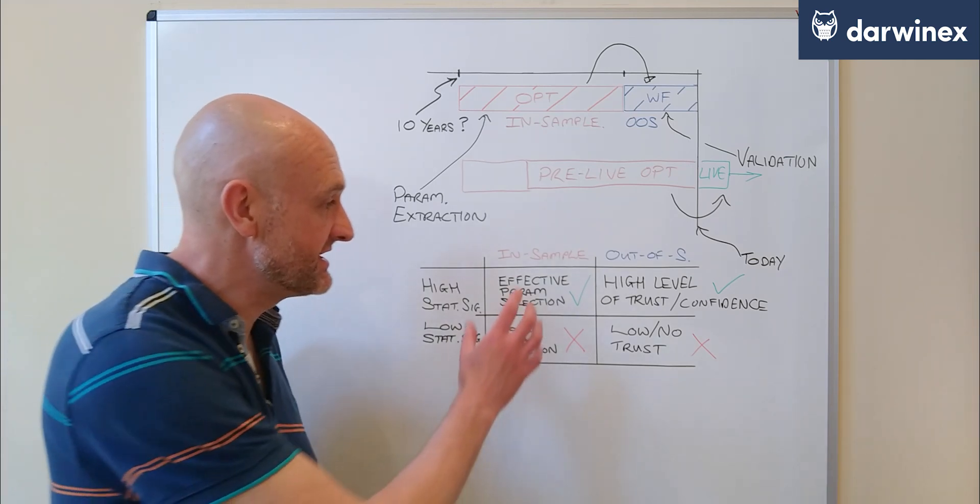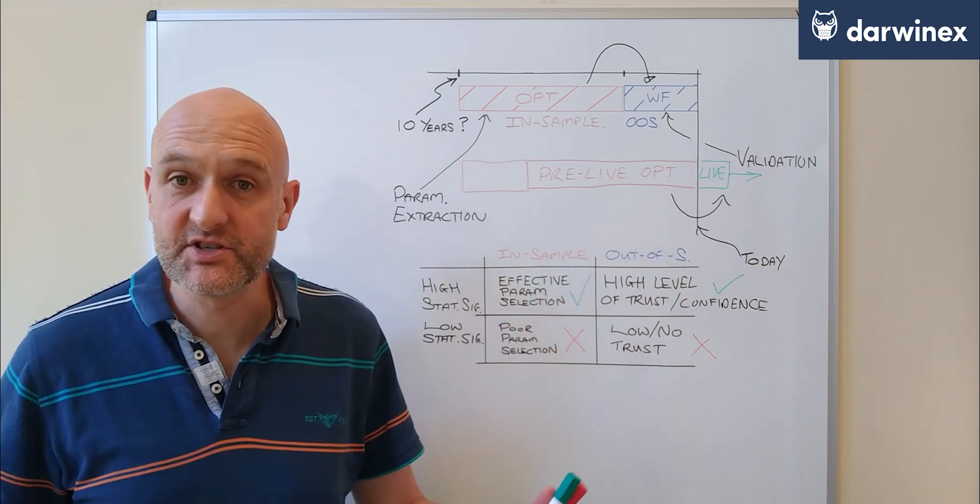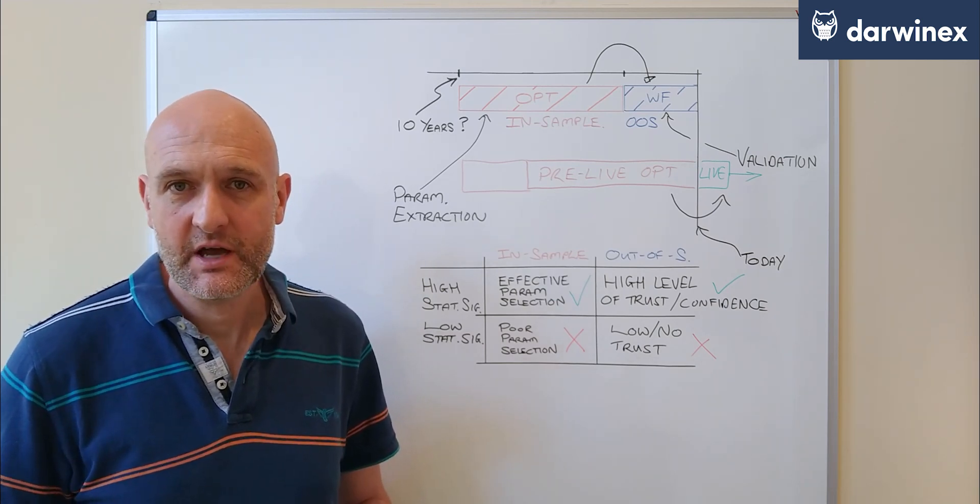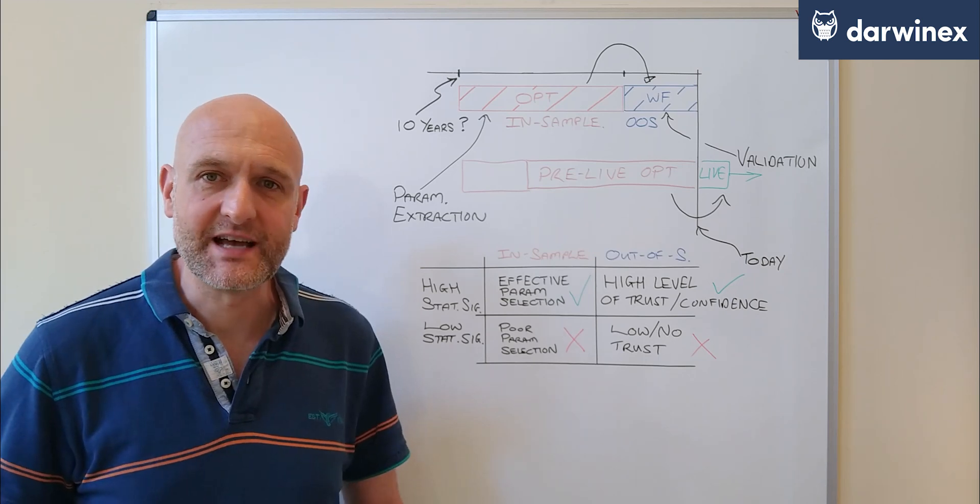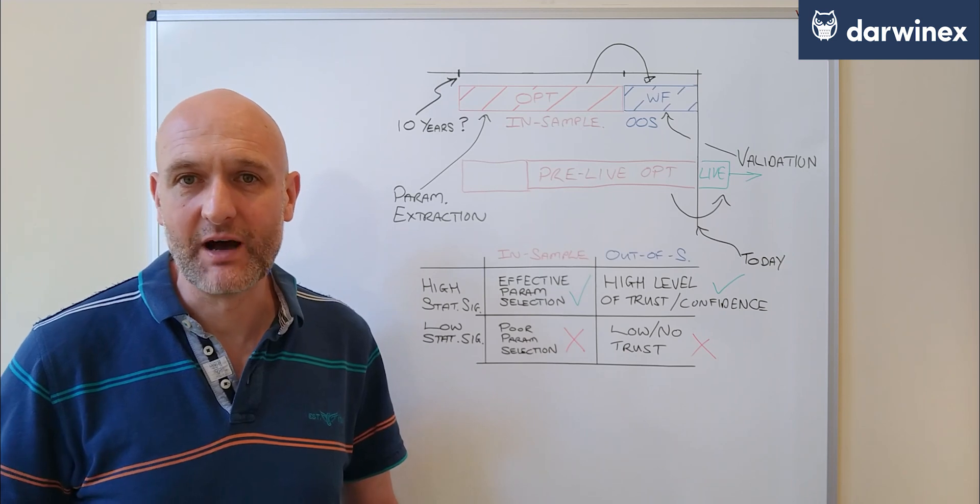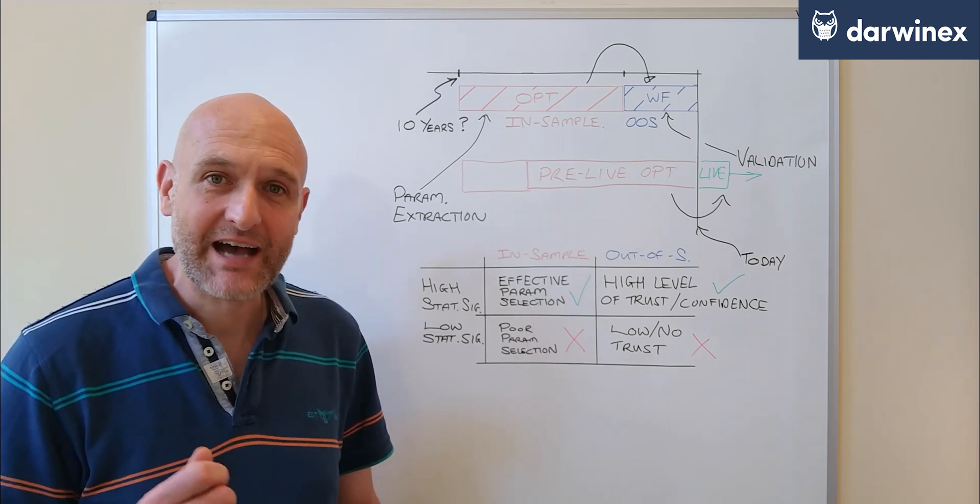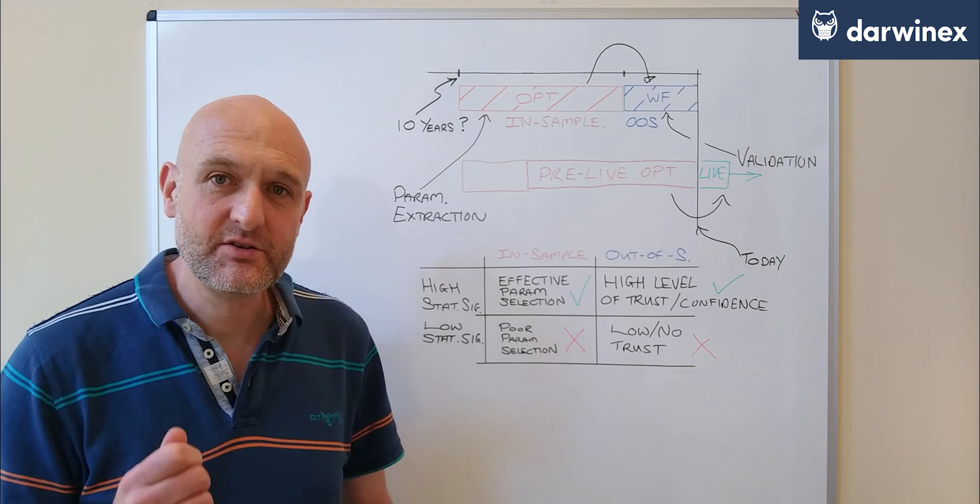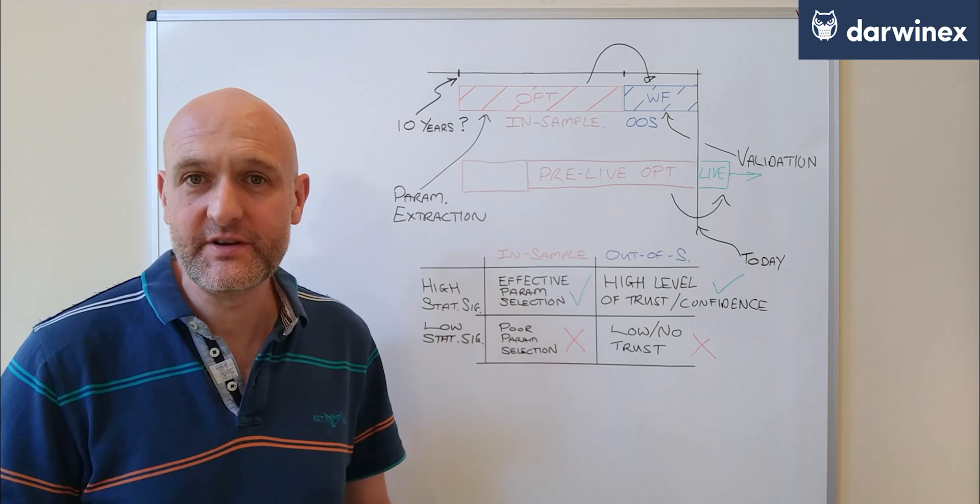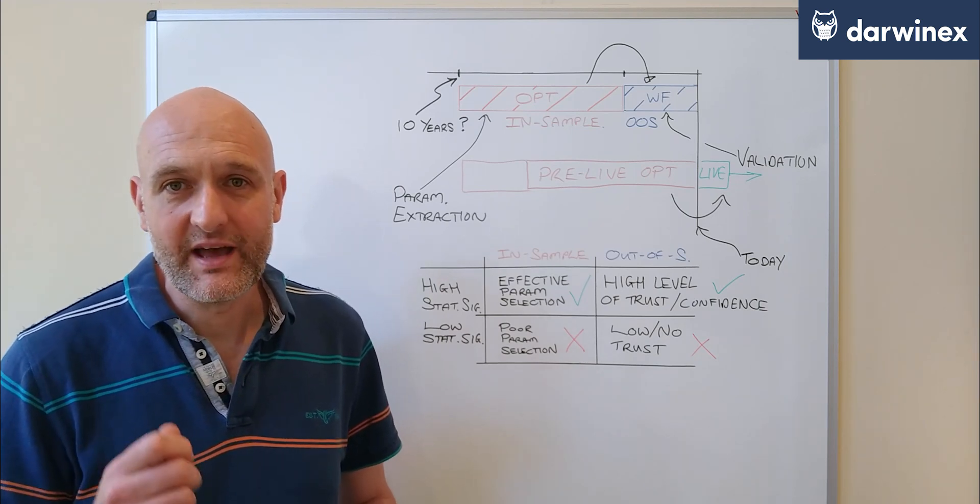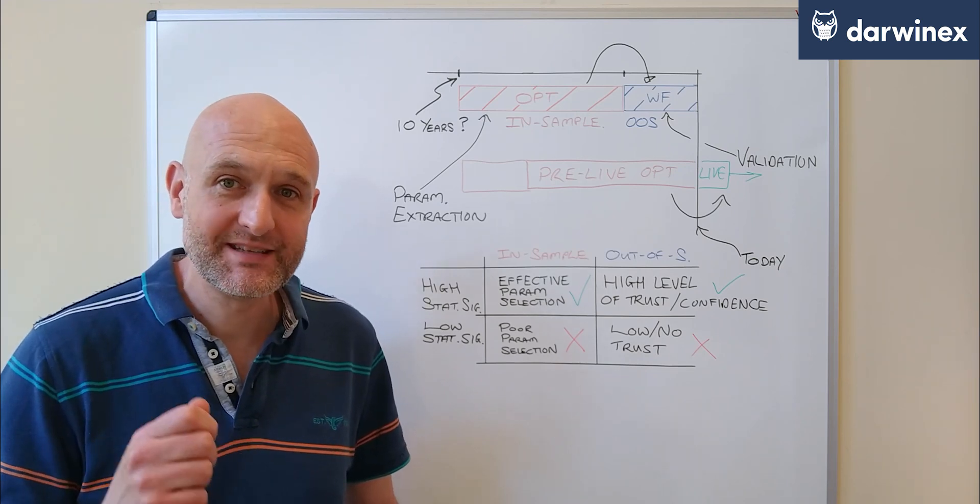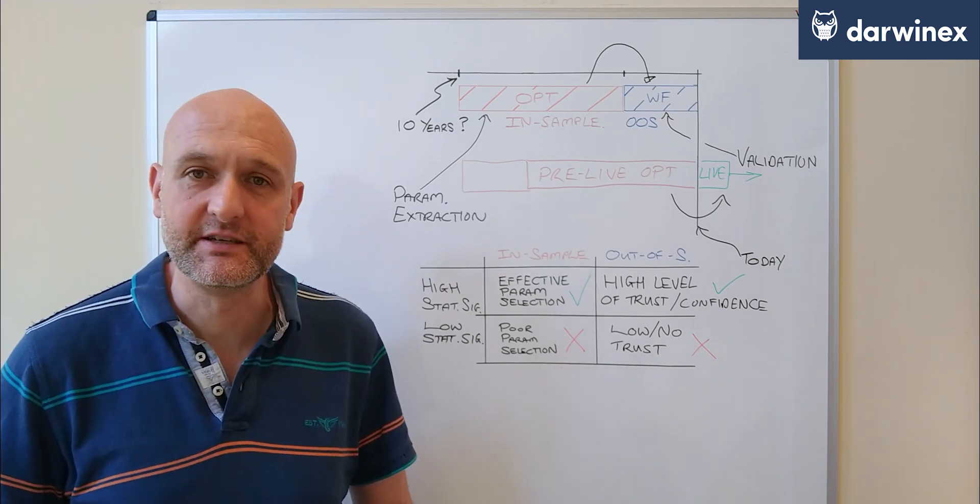So do we measure statistical significance for these two phases in the same way? Well, no, we don't, and we can't because they're fundamentally different. Remember, the walk-forward phase has fixed variable values that are tested against that out-of-sample data, while the optimization had variables that were free to move. So it has a number of degrees of freedom. And we said last time that these degrees of freedom mean that we require higher sample sizes of non-correlated trades in order to maintain the same level of statistical significance.